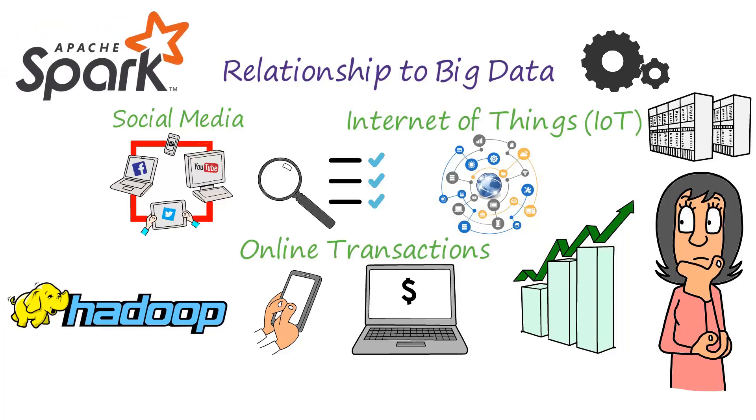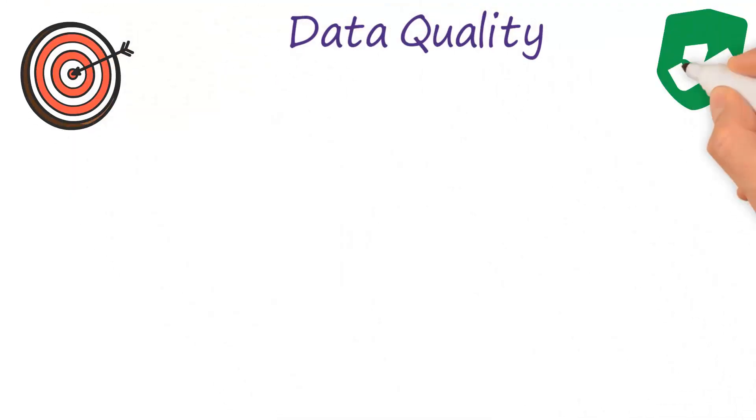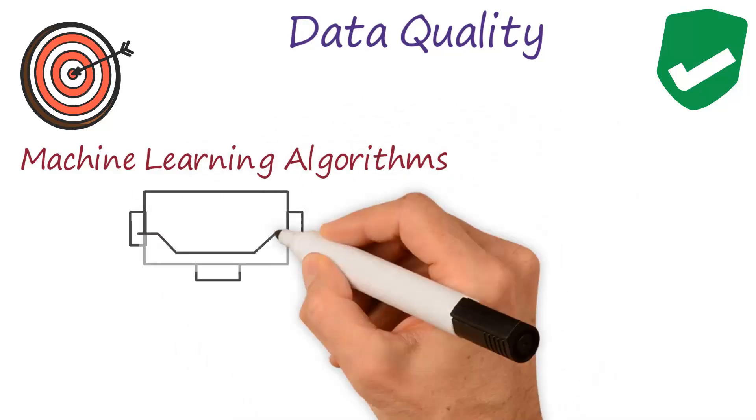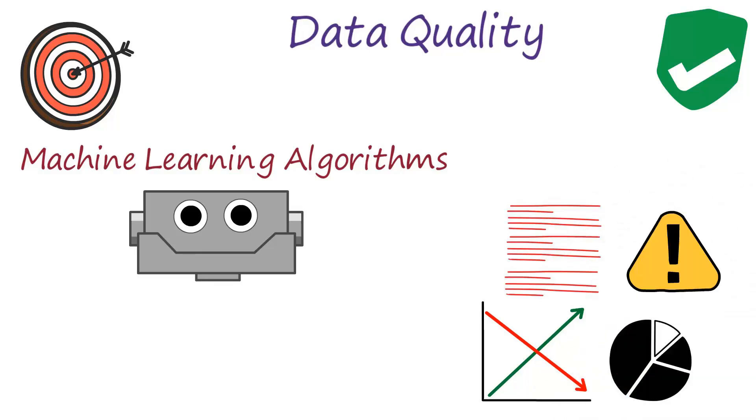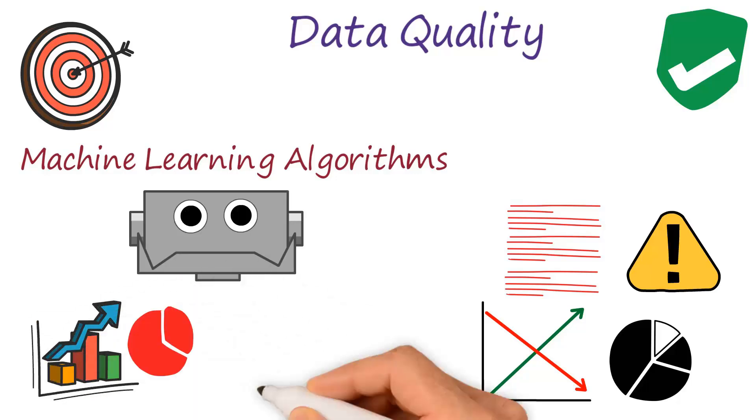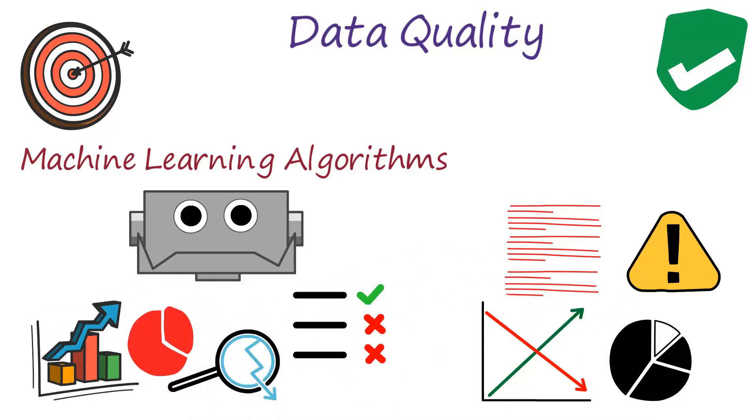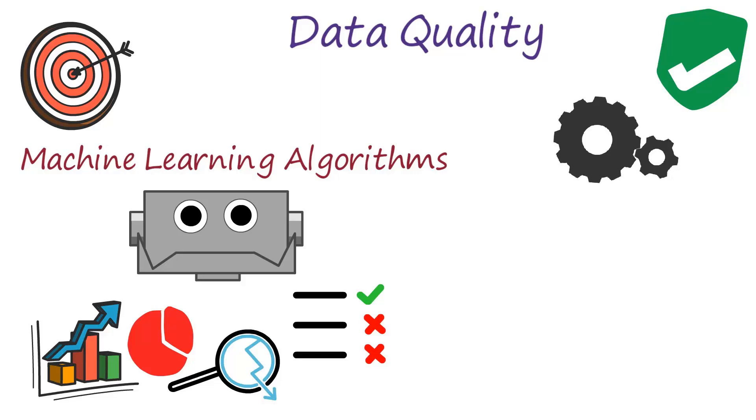Another challenge is data quality. The accuracy and reliability of machine learning algorithms depend heavily on the quality of the data they're trained on. For example, if the data is biased or contains errors, the machine learning algorithm will also be biased and make incorrect predictions. To ensure high-quality data, it's important to carefully pre-process and clean the data before using it to train machine learning algorithms.